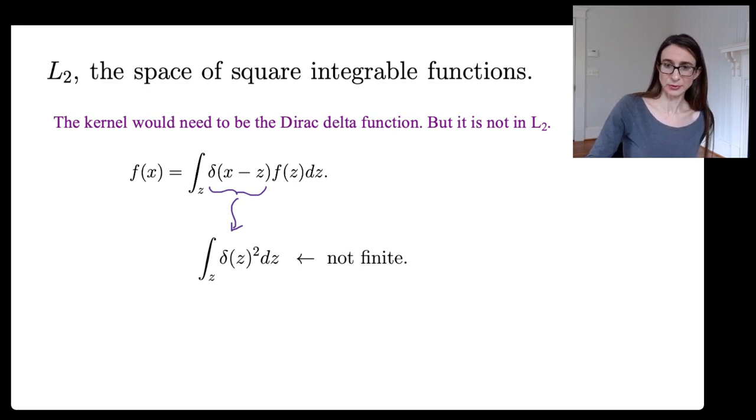So, it's actually L2, the space of square integrable functions, because what is the function that actually has the reproducing property? The evaluation functional is actually the Dirac delta function. But the Dirac delta function is not actually in L2.